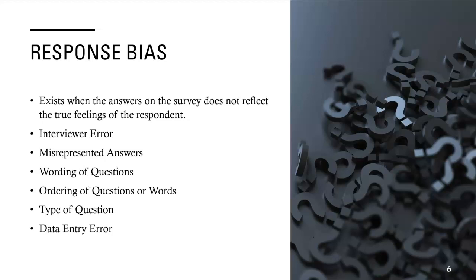Data entry error is another source of response bias. When people fill out surveys and questionnaires on paper, someone has to go back and input those answers into the system so they can be analyzed. Sometimes the people entering the data make errors, which can change your answers and misrepresent your data. So these are all called response bias.